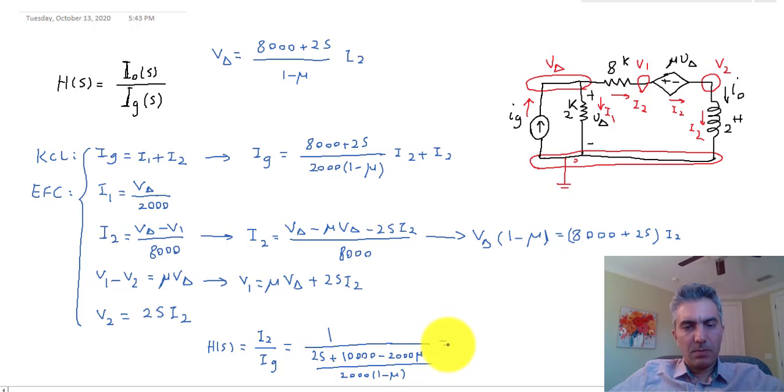If I simplify that, that would be 1,000 times (1 minus mu) over s plus 5,000 minus 1,000 mu.